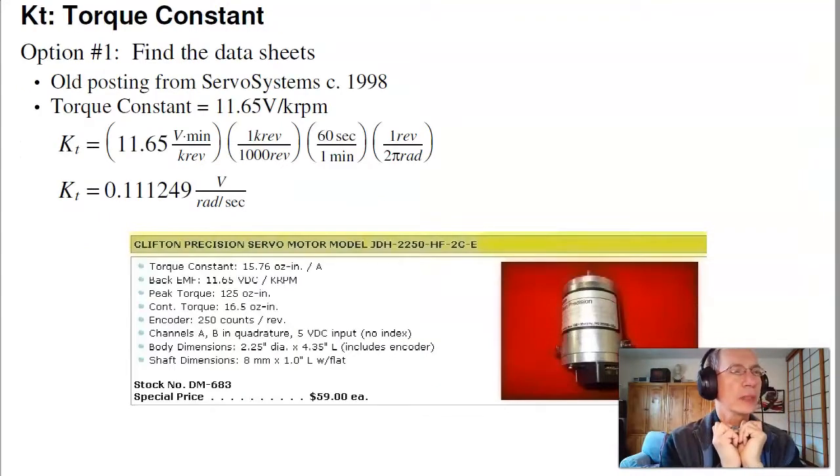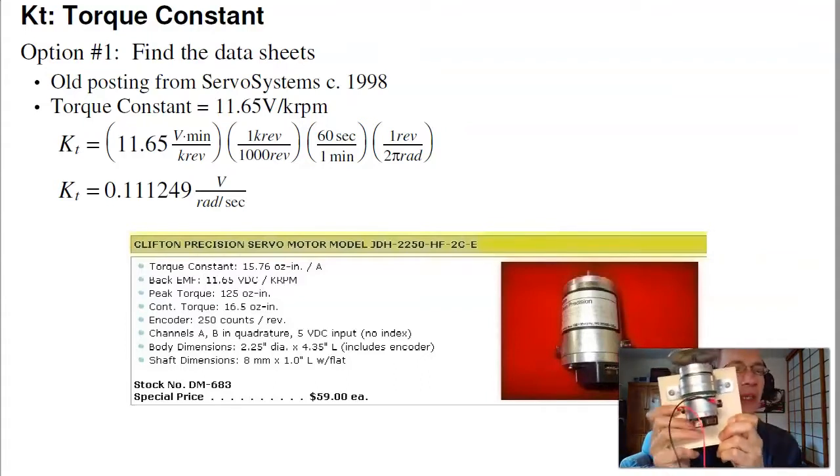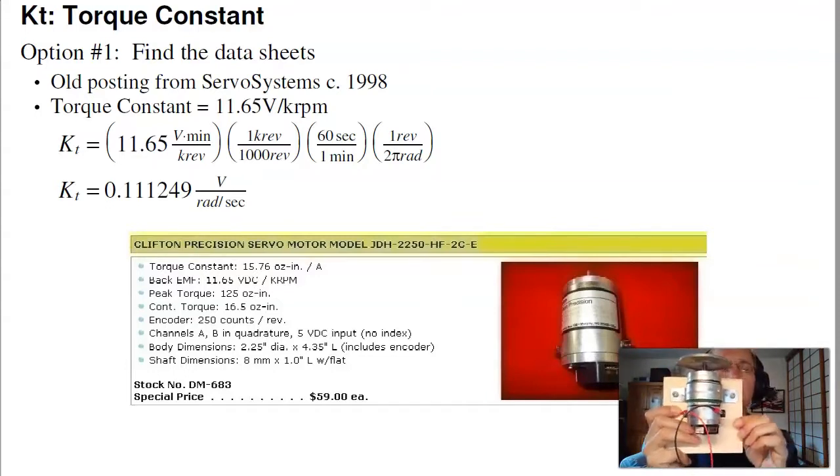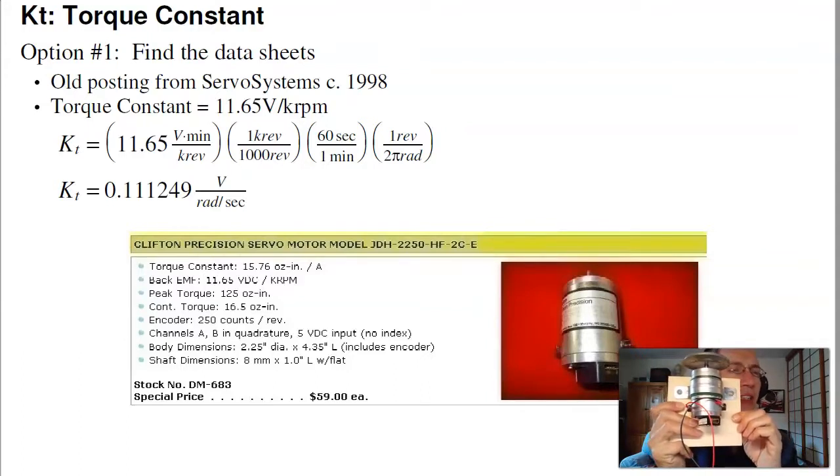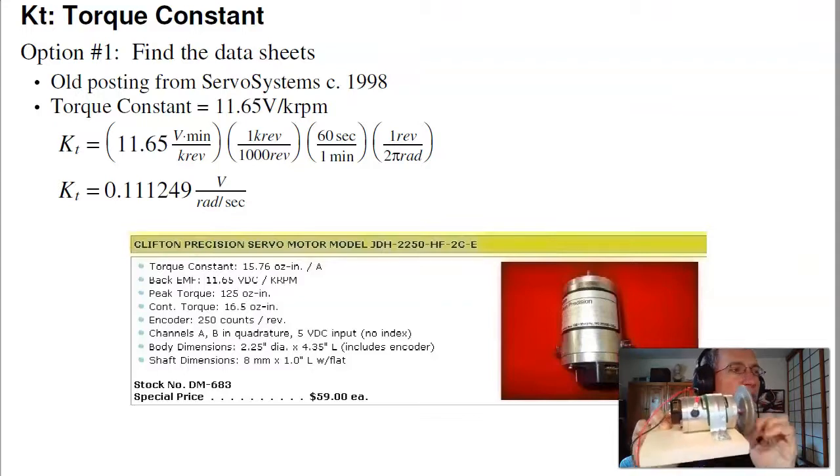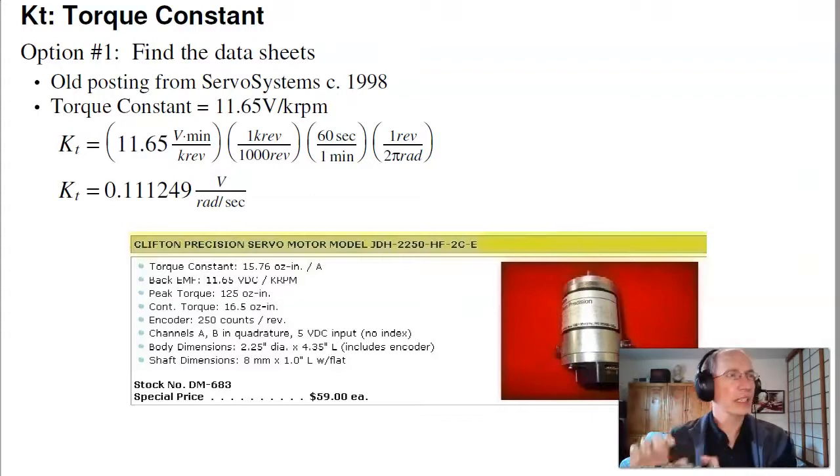Next, I'd like to measure the torque constant. The torque constant is newton meters per amp. So what I could do is take the motor, apply constant current to the motor, and measure the torque. The torque is related to the current by newton meters per amp, it's related to the kt. Another way to measure it is spin the motor at a constant speed and measure the voltage. That'll give you volts per radian per second.